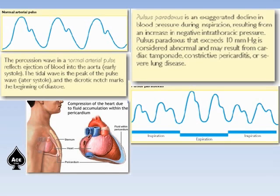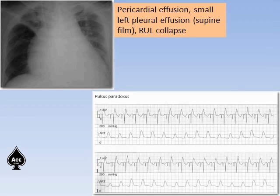The normal arterial pulse is shown on the left panel. The percussion wave reflects ejection of blood into the aorta in early systole. The tidal wave is the peak of the pulse wave in later systole, and the dicrotic notch marks the beginning of diastole. Pulsus paradoxus is an exaggerated decline in blood pressure during respiration resulting from an increase in negative intrathoracic pressure, where the difference is more than 10 mmHg between inspiration and expiration, as shown in the picture on the right. The X-ray of pericardial effusion is also shown, with a small left-sided pleural effusion and right upper lobe collapse visible.